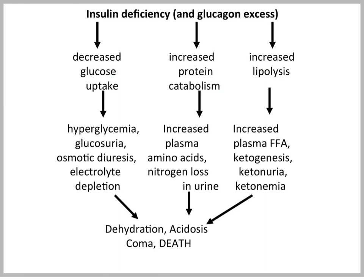With insulin deficiency in general — and insulin deficiency goes along with glucagon excess — we have decreased glucose uptake into tissues, increased protein catabolism, and increased lipolysis. So we are in a catabolic state. The result is hyperglycemia. There is a threshold for the excretion of glucose in the kidney. When glucose becomes too high in blood, glucose is spilled into the urine. We see glucosuria, and since glucose is an osmotic agent, we see not only a loss of glucose in urine, but also a loss of water and electrolytes.